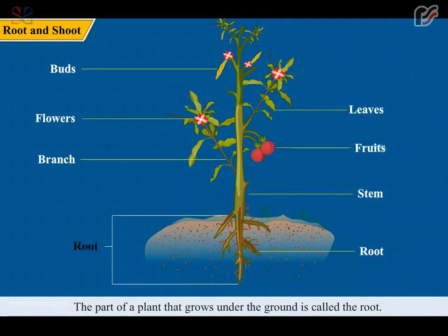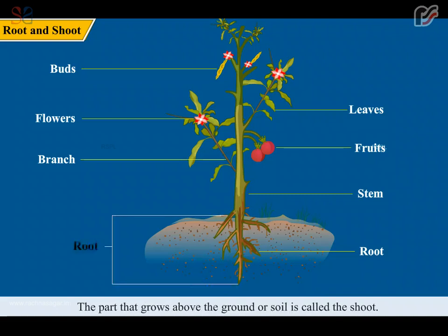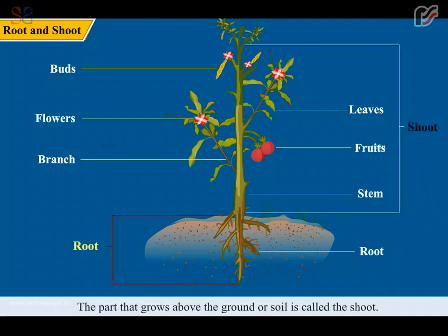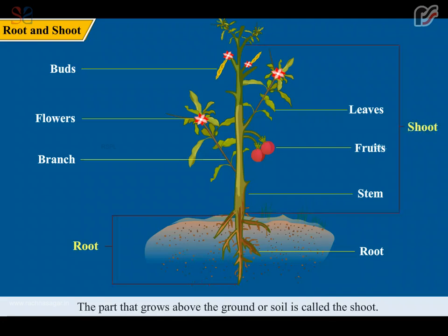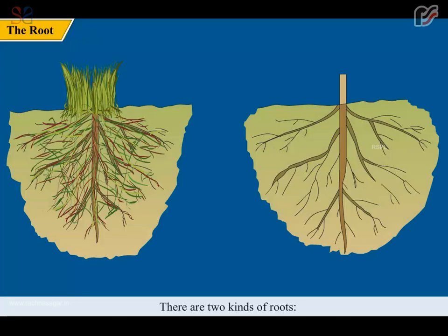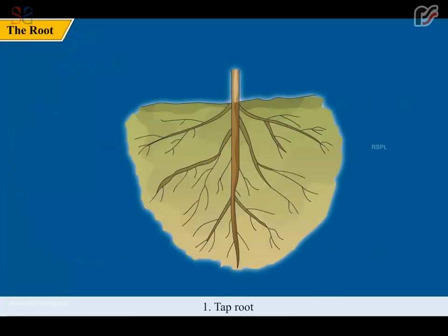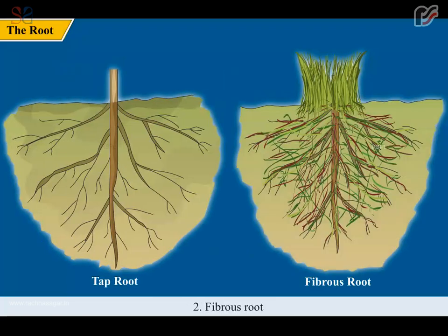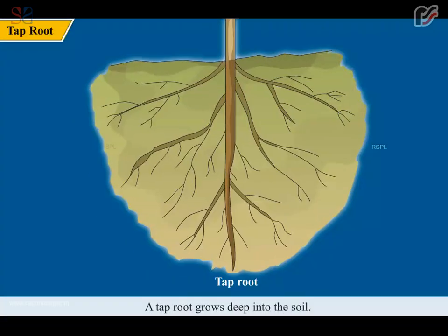The part of a plant that grows under the ground is called the root. The part that grows above the ground or soil is called the shoot. There are two kinds of roots: taproot and fibrous root.